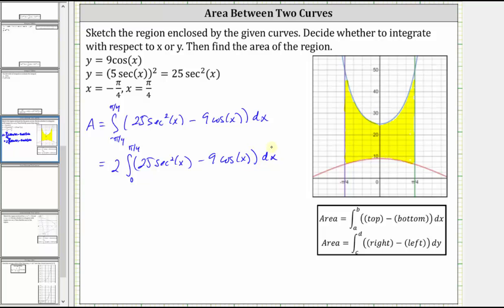This will just make finding big F of b minus big F of a simpler. So now we'll go ahead and find the antiderivative. The antiderivative of 25 secant squared x is 25 tangent x minus the antiderivative of 9 cosine x, which is 9 sine x.